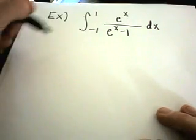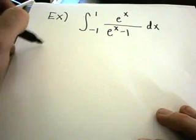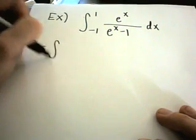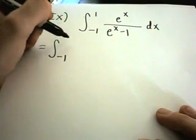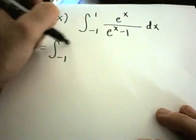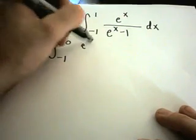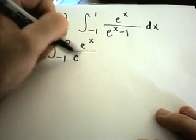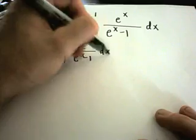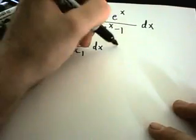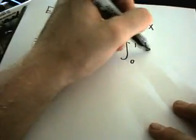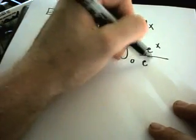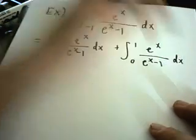So our problem place is at 0, so we'll break it up at 0: e to the x over e to the x minus 1, and then we'll have another integral as well from 0 to 1 of e to the x over e to the x minus 1.